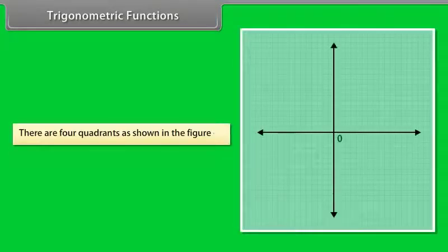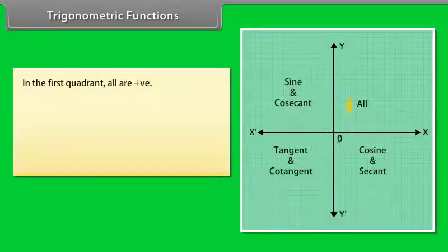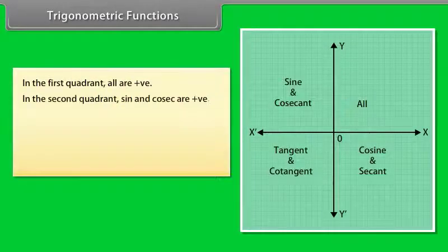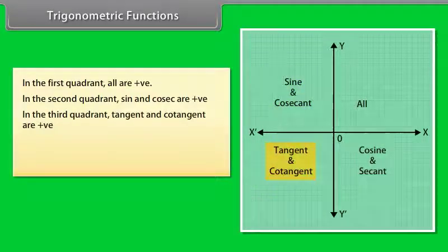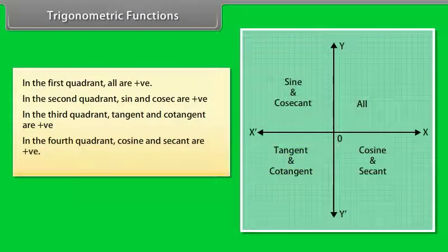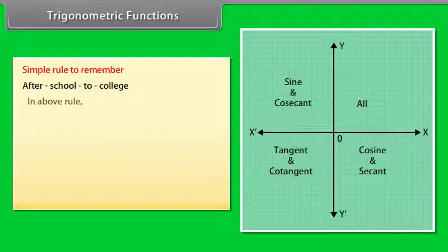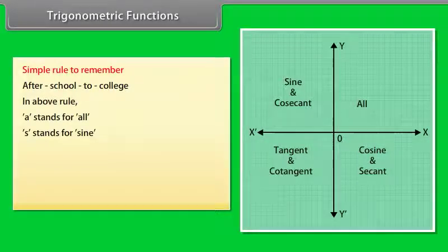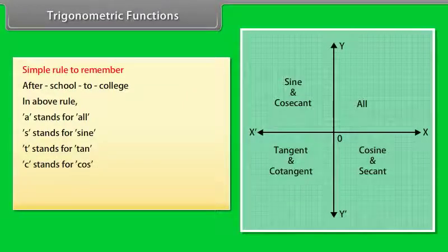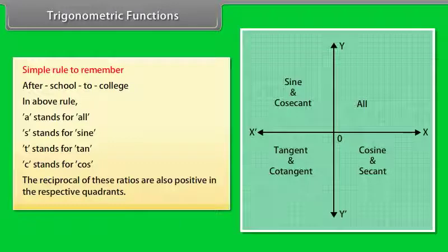There are four quadrants. In the first quadrant, all are positive. In the second quadrant, sine and cosec are positive. In the third quadrant, tangent and cotangent are positive. In the fourth quadrant, cosine and secant are positive. A simple rule to remember this is 'After School To College': A stands for All, S stands for Sine, T stands for Tan, and C stands for Cos. The reciprocals of these ratios are also positive in the respective quadrants.